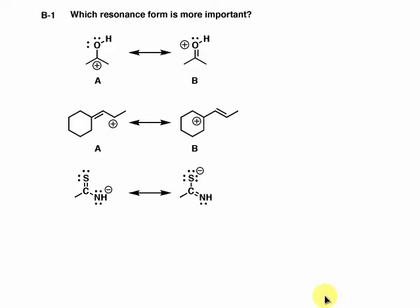In this set of problems we're going to start answering which resonance form is most important. We have three examples, and in order to solve these types of problems we have to bear in mind the rules for determining which resonance forms are the most important.